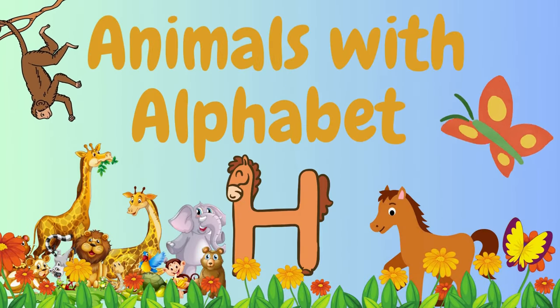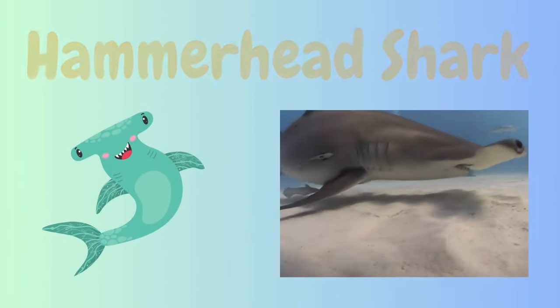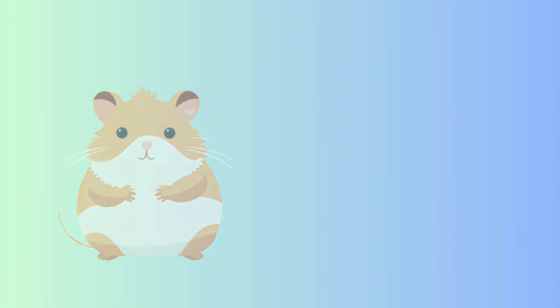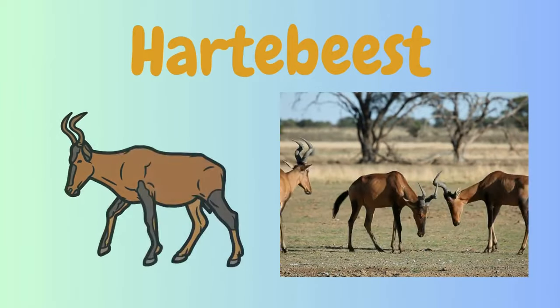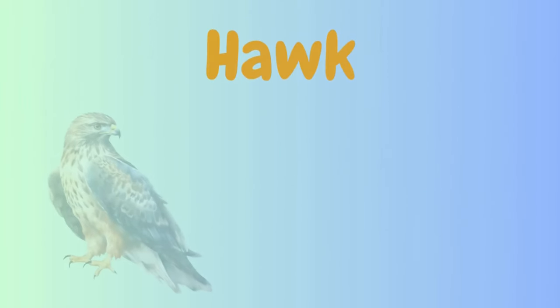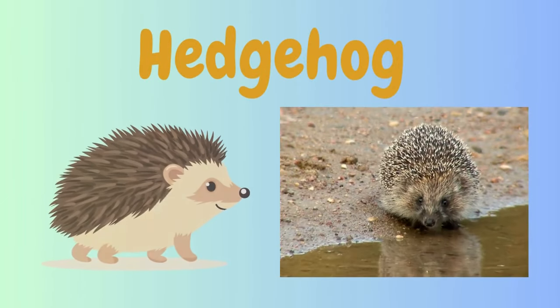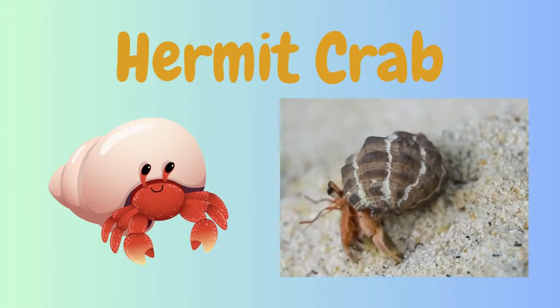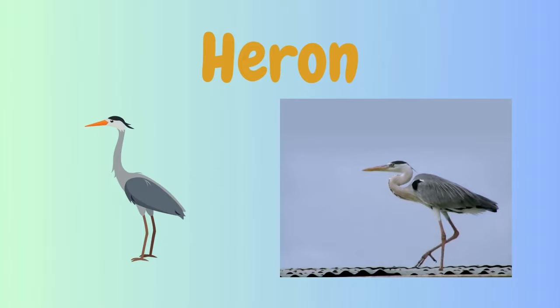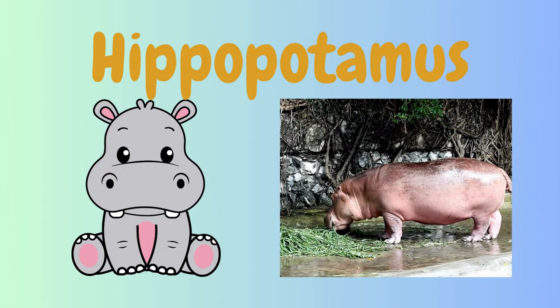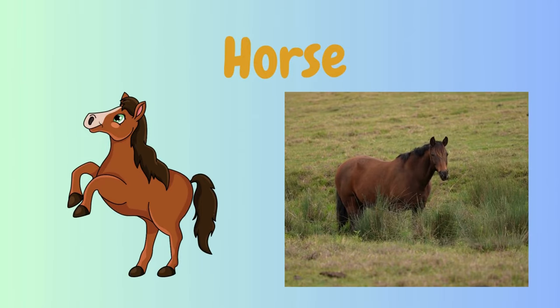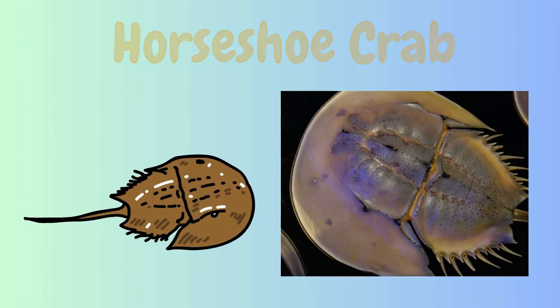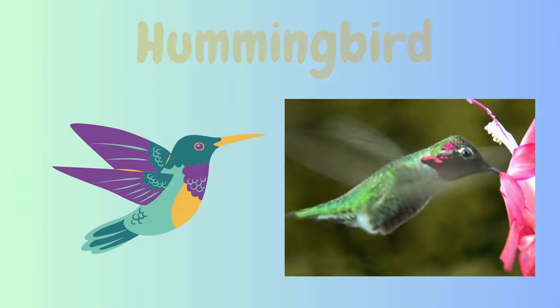Animals with Alphabet H. Hammerhead Shark. Hamster. Hare. Harpy Eagle. Hawk. Hedgehog. Hermit Crab. Heron. Hippopotamus. Hornbill. Horse. Horseshoe Crab. Howler Monkey. Hummingbird. Humpback Whale.